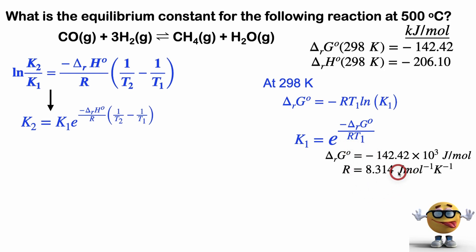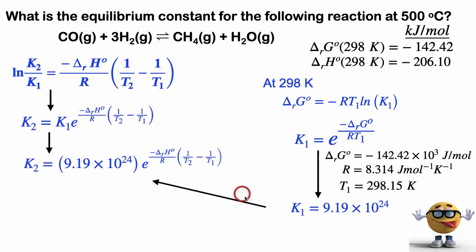because I know that R is in joules. You don't want to choose the R that has pressure units in it. You want to have units of joules, so it cancels out with the unit of joules of the change in Gibbs energy. And then our T1 is 298 K, because that's what we have the data for. If we plug those numbers in, we get a K1 of a huge number, 9.19 times 10 to the 24. A huge, huge number, barely in equilibrium here. But anyways, we'll plug it in.